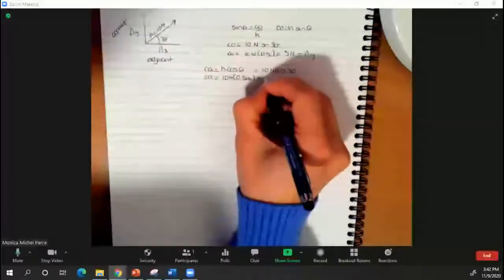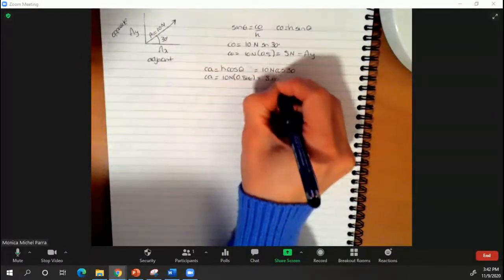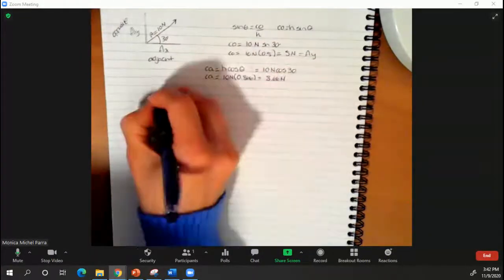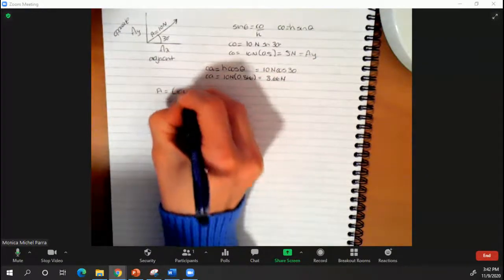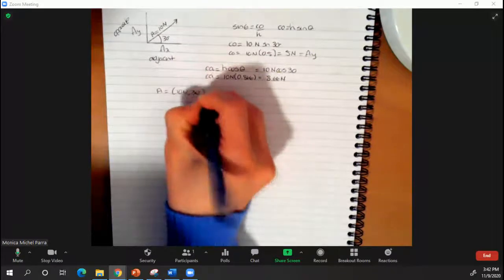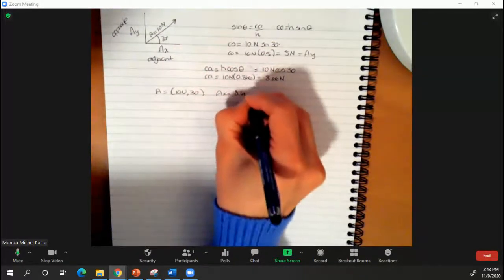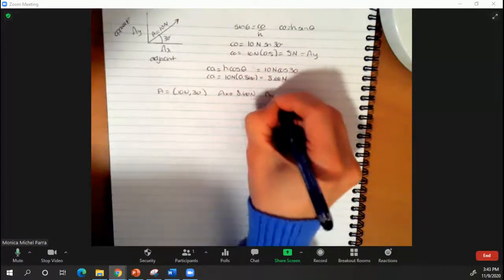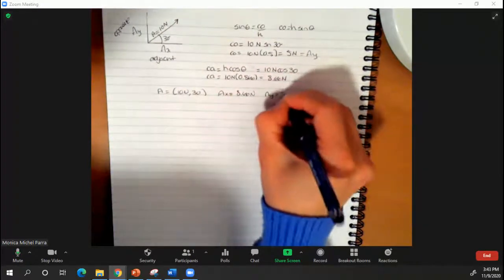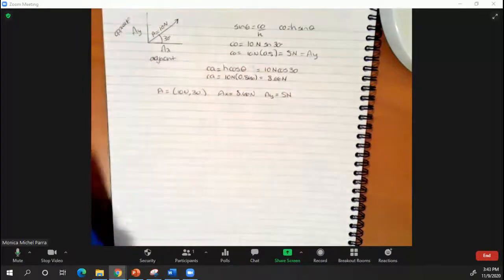So we can say that if vector A is 10 newtons at 30 degrees, the component in x is going to be 8.66 newtons and the component in y is going to be 5 newtons.